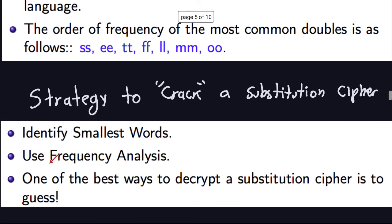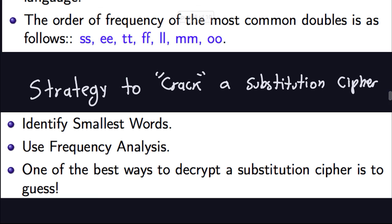The next step is frequency analysis: look for the most frequent single letters, two-letter groups, and so on. One of the most important aspects is educated guessing. Even though this is mathematical, when you want to decipher something you have to use common sense — what makes more sense in the context of the ciphertext? Guessing is an important part of cracking the substitution cipher, but it's always a guess based on facts about letter and word frequency.